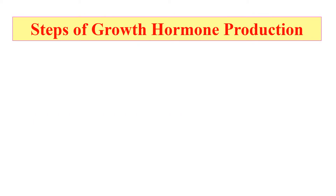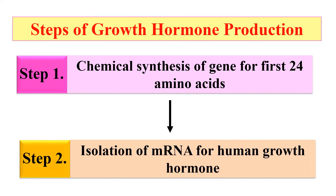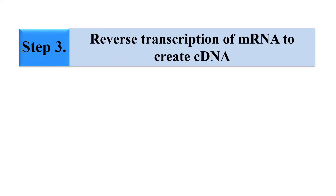The steps of growth hormone production involve: first, chemical synthesis of the gene for the first 24 amino acids. Since the bacteria can also translate those first 24 amino acids, we remove that portion from the complete growth hormone gene, and these 24 amino acids are artificially synthesized from nucleotides. In the next step, the messenger RNA for growth hormone is isolated from human pituitary gland tissue. Then reverse transcription of this messenger RNA is done by the enzyme reverse transcriptase, which converts the messenger RNA into DNA known as cDNA or complementary DNA.